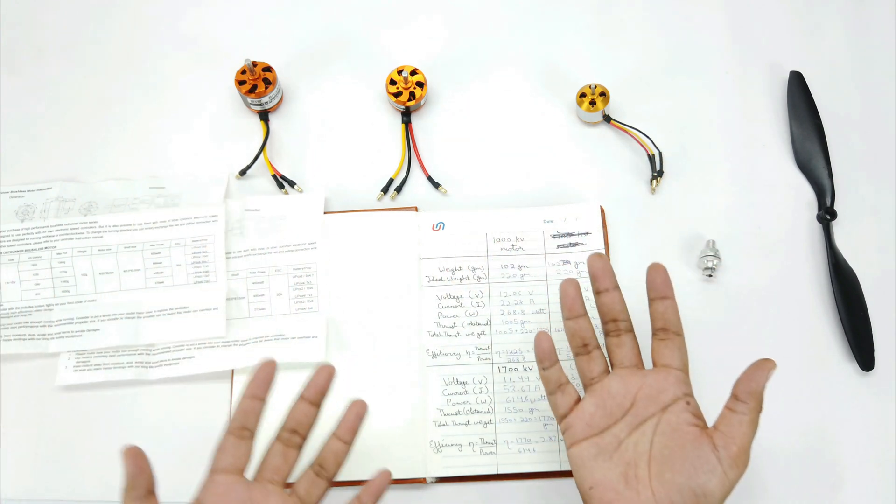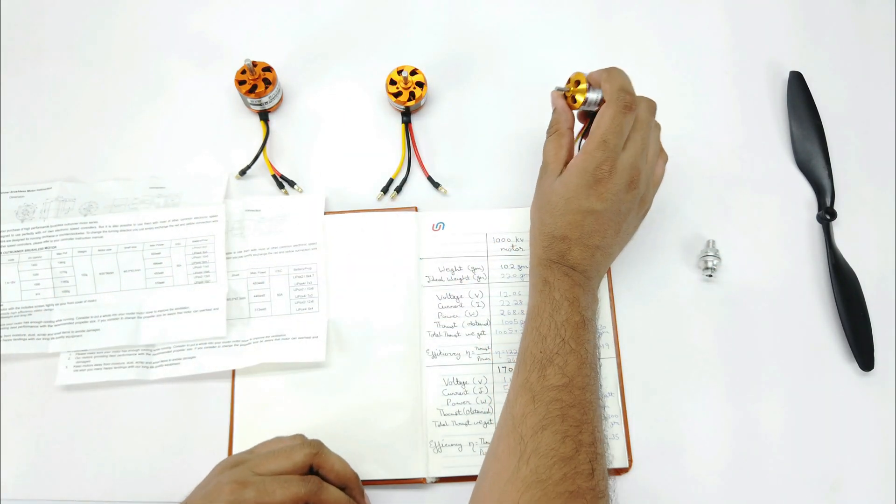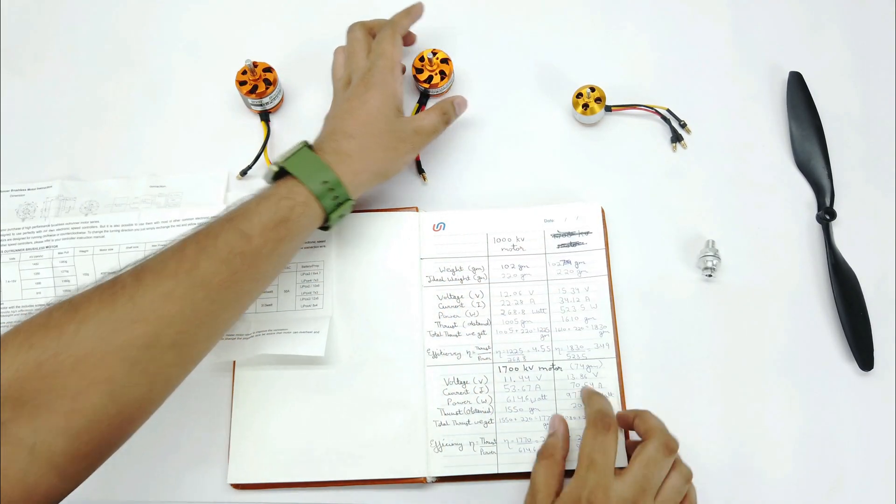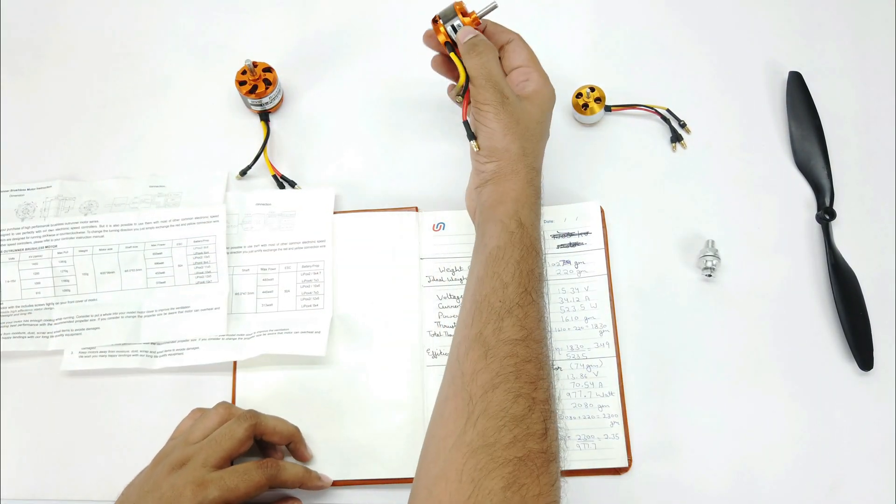If we make a drone with this 500 grams, it can only go up to 2 kilograms. And let's keep this 1700kV motor aside since we have to run it with 80 Ampere ESC.